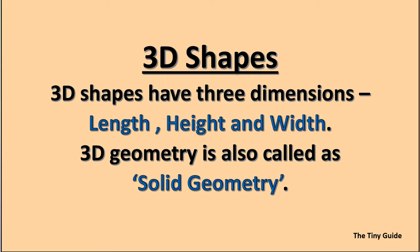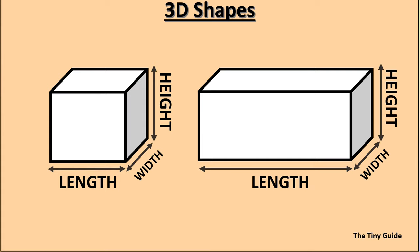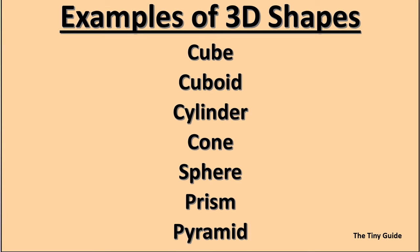Next, we will move to 3D shapes. 3D shapes have three dimensions: length, height, and width. 3D geometry is also called solid geometry. We will see how to identify 3D shapes. As discussed, these shapes have length, height, and width.